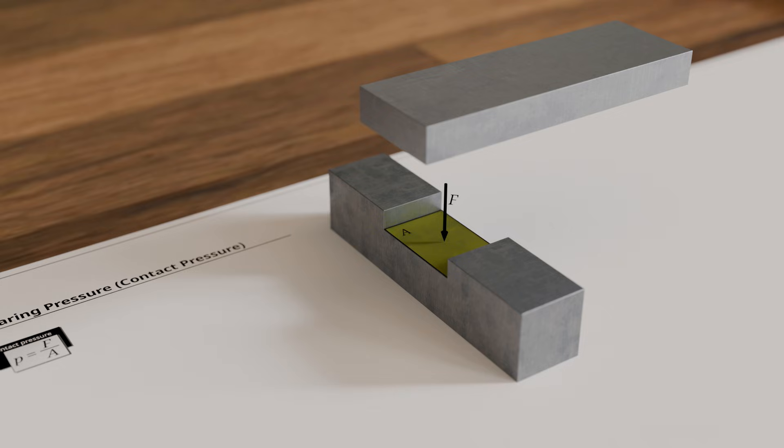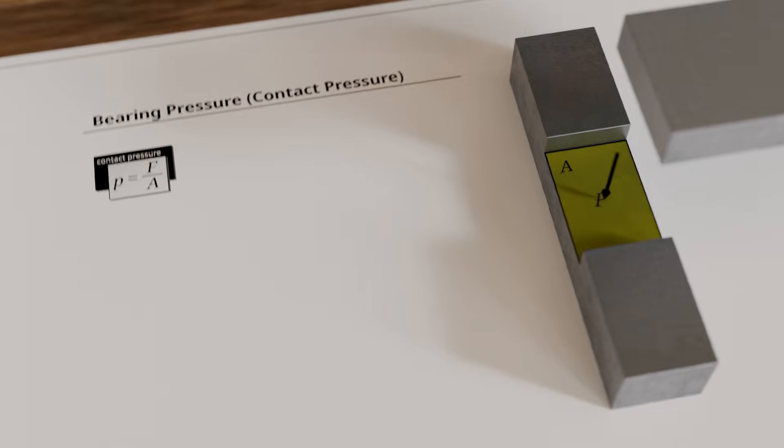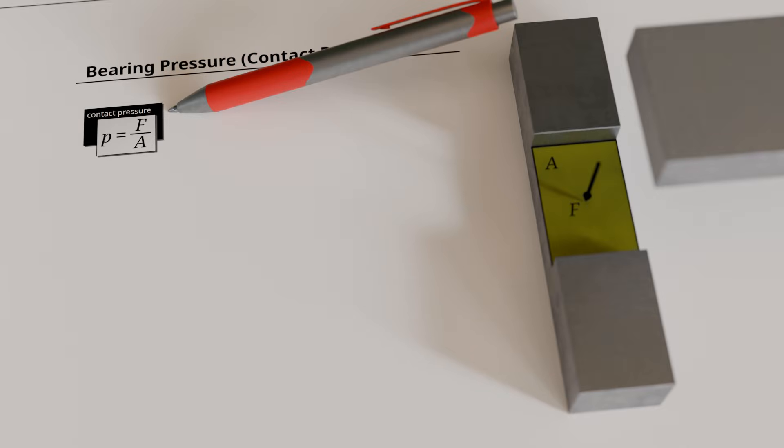Contact pressure, as a measure of load intensity, is defined as the ratio between force and the contact area. In principle, this definition is analogous to the definition of stress under tensile or compressive loading.